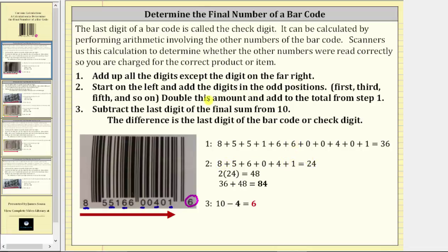Then we double this amount, which is two times 24, which equals 48. And then we add this amount to the sum from step one, which gives us 36 plus 48, which equals 84.